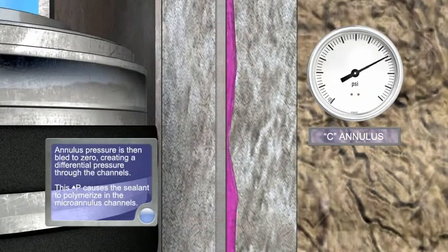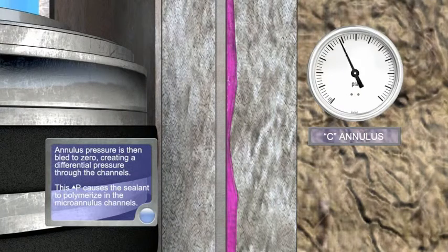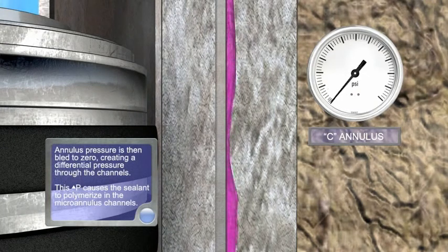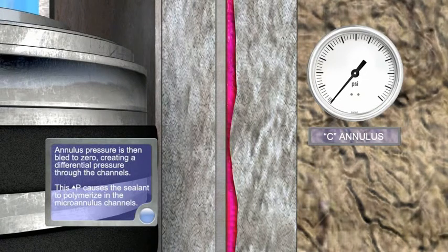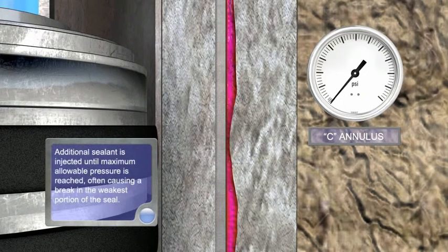Annulus pressure is then bled to zero, creating a differential pressure through the channels. This delta P, change in pressure, causes the sealant to polymerize in the microannulus channels.